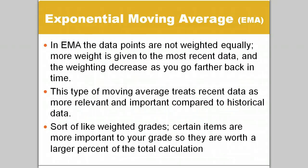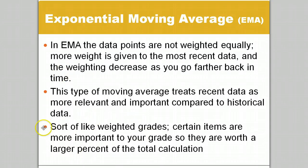Now that we understand simple moving average and some of its limitations, we can talk about exponential moving average, or EMA, and how it addresses some of those limitations. In EMA, all of the historical data doesn't have the same impact on the calculated average — the more recent data has more impact than the older historical data, and this impact decreases exponentially over time. You can think of it kind of like weighted grades, where certain items have more impact on your grade, so they're given more weight, or a larger percent of the total calculation.